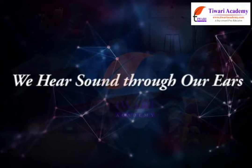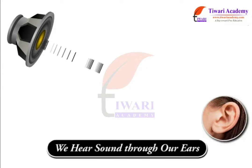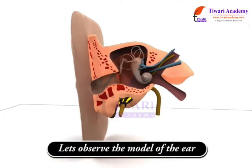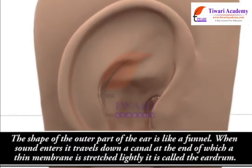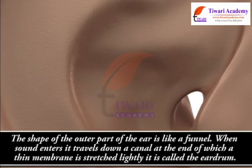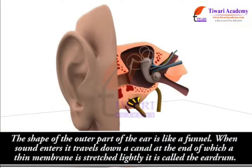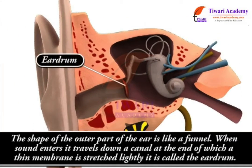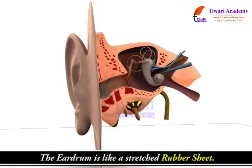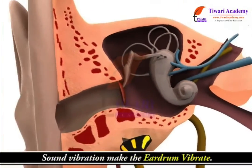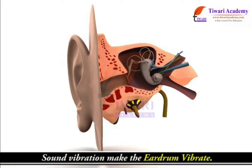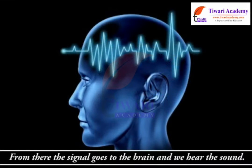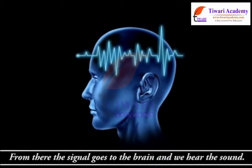We hear sound through our ears. Let us observe the model of the ear. The shape of the outer part of the ear is like a funnel. When sound enters, it travels down a canal, at the end of which is a thin membrane stretched lightly — it is called the eardrum. The eardrum is like a stretched rubber sheet. Sound vibration makes the eardrum vibrate. The eardrum sends vibration to the inner ear. From there, the signal goes to the brain and we can hear the sound.